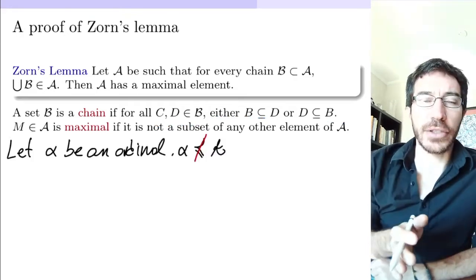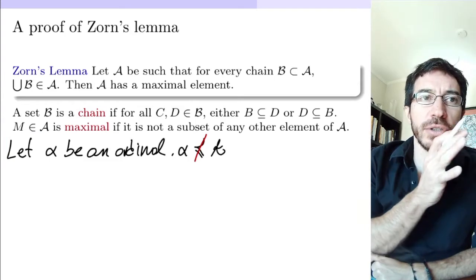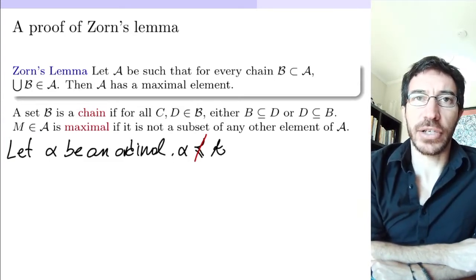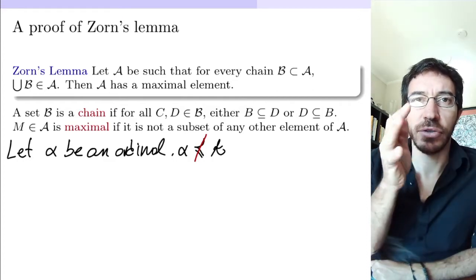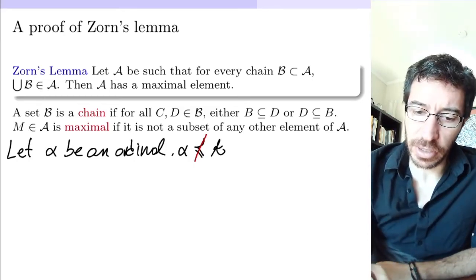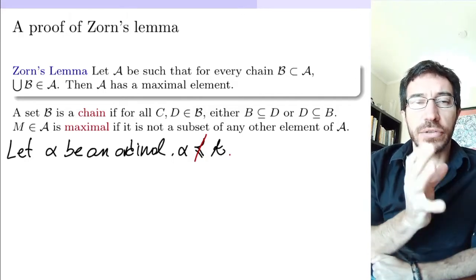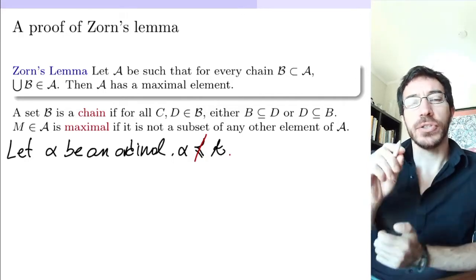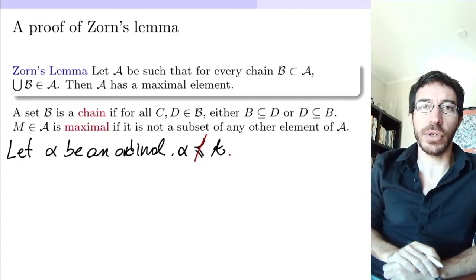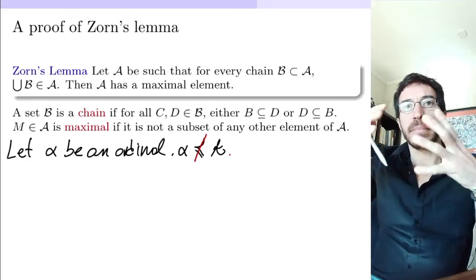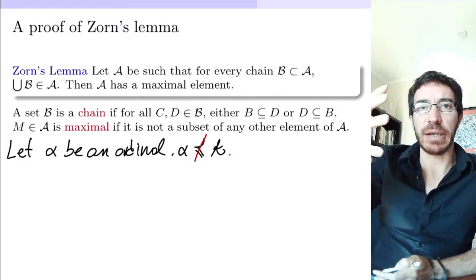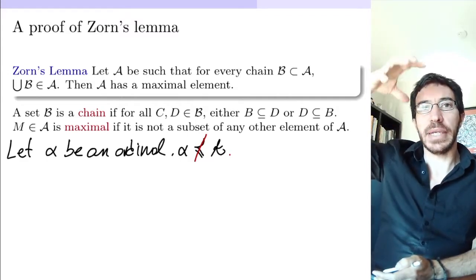So let's prove this. We start using Hartog's theorem from the previous video to take an ordinal alpha that is not dominated by the collection A — so there is no one-to-one function from alpha to the collection A. The idea now is to use transfinite recursion on alpha to define a very long chain of elements of the collection A, trying to find the maximal element. Essentially we're trying to find the biggest element we can, and we do it step by step by recursion. Every step we take a bigger set within the collection.